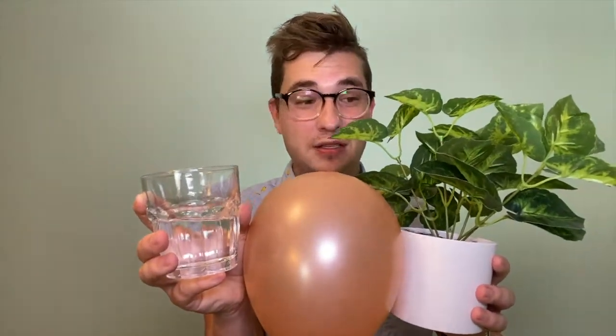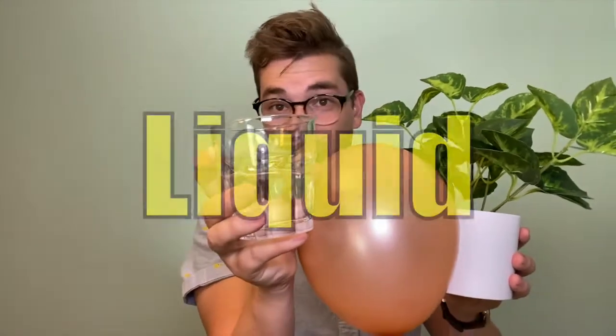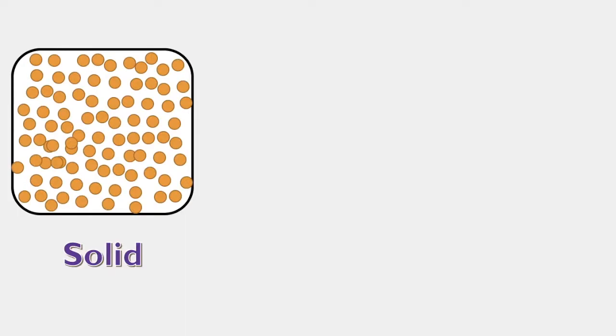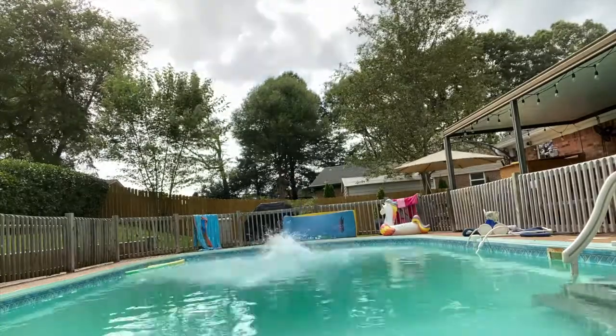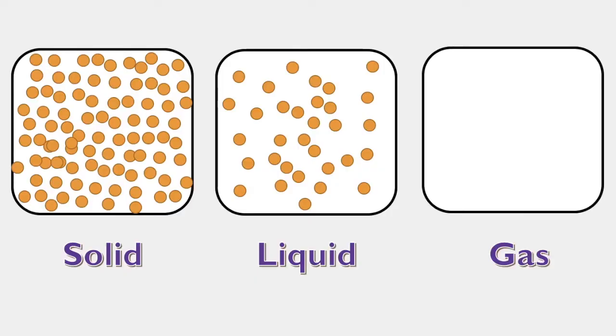In a solid, the particles of matter are packed extremely close together — that's why I can't go through this solid wall. In a liquid, they're spread out a little bit more, which is why I could swim through the pool; the particles are far enough apart that I can move through them, but close enough that they still slow me down. In a gas, the particles are really far away from each other, which is why you can move through a gas so easily.